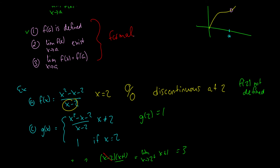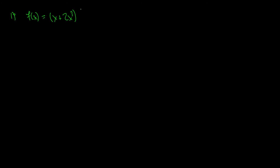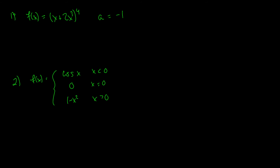I'll pose two practice problems — you can pause the video and try them yourself. Number one: show whether the function f of x equals x plus 2x cubed, all to the fourth, is continuous at a equals negative one. Number two: f of x is a piecewise function equal to cosine of x when x is less than 0, zero when x equals 0, and 1 minus x squared when x is greater than 0. Is it continuous, and if not, why?